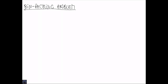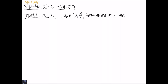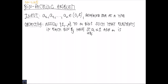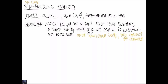Next, we consider the bin packing problem in the online setting. An input consists of a sequence of item sizes, revealed one at a time. Each item has a size in the interval [0, 1]. The objective is to assign items to bins — we can create any number of bins M — such that the sum of items in each bin is at most 1, which is the bin capacity, and M is as small as possible. In the online setting, once we have assigned an item to a bin, we cannot change the assignment.